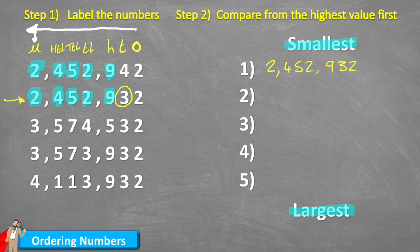And now I know as well that this must be my second smallest number, because remember, they were the only ones that had two in the million column. So my next smallest would be 2,452,942. And I can cross these two numbers off.